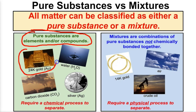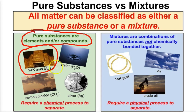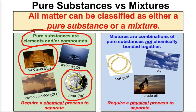For example, 24 karat gold is solid, pure gold. Gold is an element from the periodic table, so 24 karat gold is a pure substance. If we take a look at this silver coin from the United States Mint, this silver coin is 100% silver.